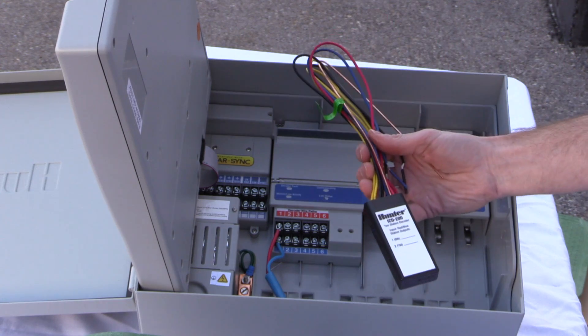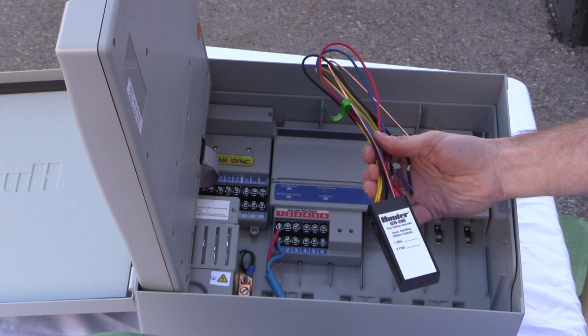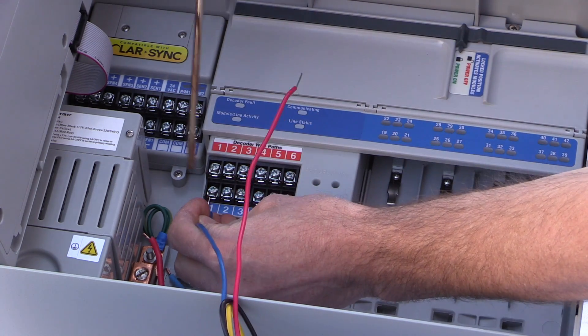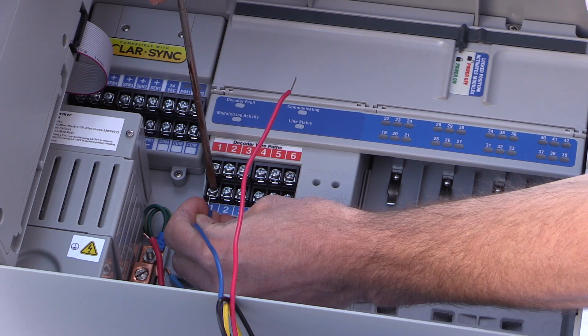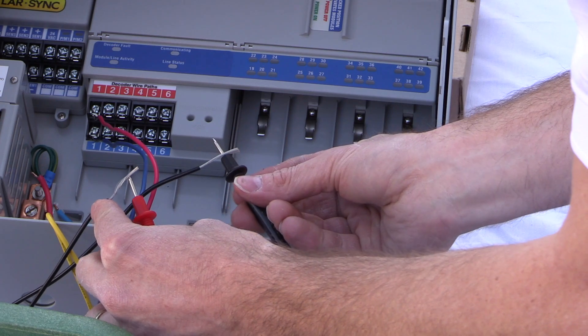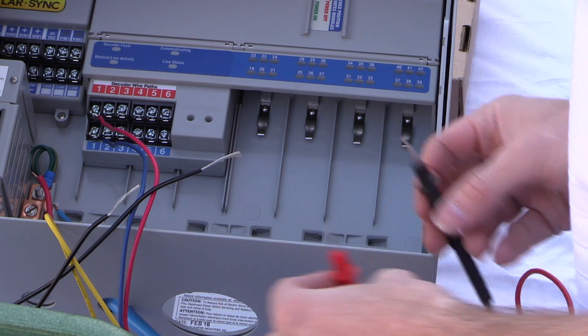You can also take a spare decoder and connect it directly at the controller to verify that the controller is operating properly. A common rookie mistake is to assume that the controller itself is the source of field issues. In a vast majority of reported problems, the issue will be in the field wiring.